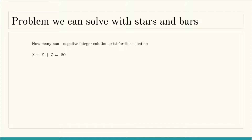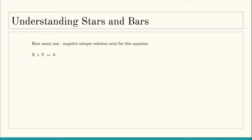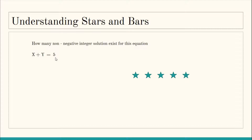Once again we look at the question: how many non-negative integer solutions exist for X + Y + Z = 20? To show you what Stars and Bars is, let's take a simpler version: X + Y = 5. To solve this, let's take five stars. I've used stars because the name of this technique is Stars and Bars, so it's logical to use stars here.